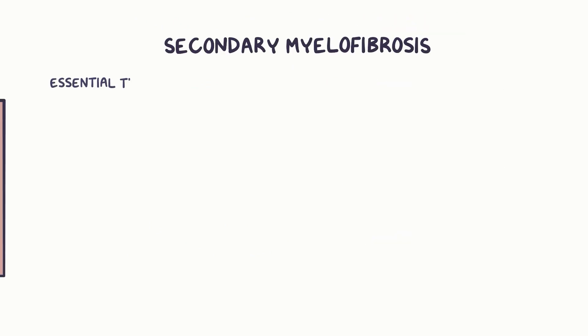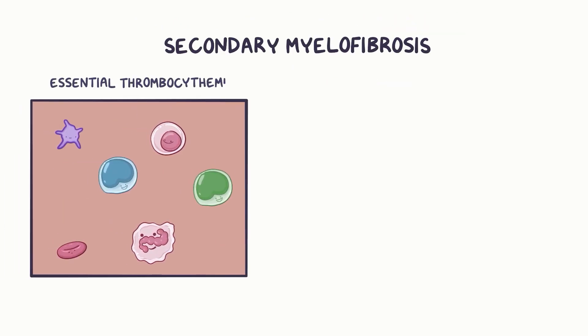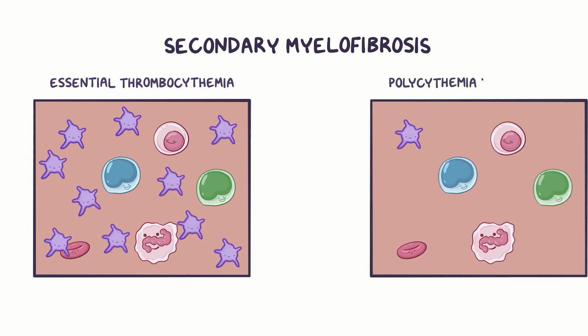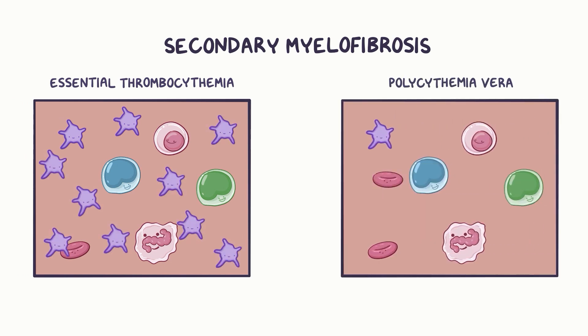Secondary myelofibrosis can develop from conditions like essential thrombocythemia, which is where excess platelets are produced, and polycythemia vera, which is where excess red blood cells are produced.